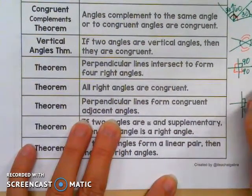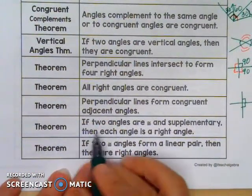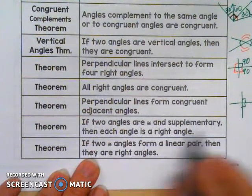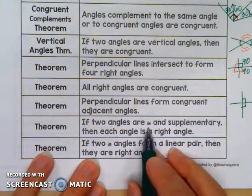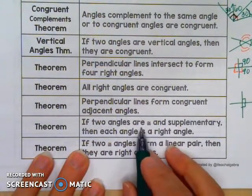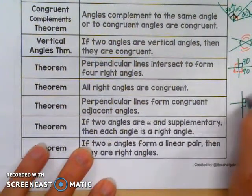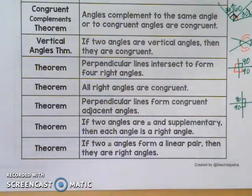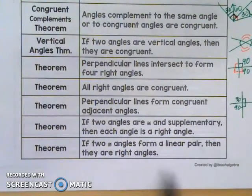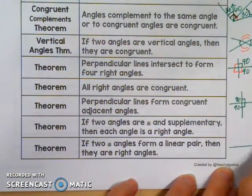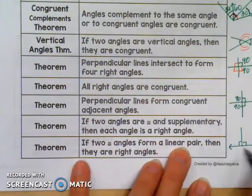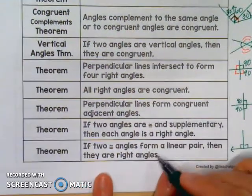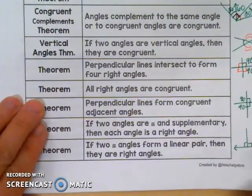These two are both 90 degrees, they're next to each other, and they're congruent. If two angles are congruent and supplementary, then each angle is a right angle — since they're the same measure and they add up to 180, each one must be 90 degrees. Similarly, if two congruent angles form a linear pair, they must both be 90 degrees in order to make the linear pair, so they are both right angles.